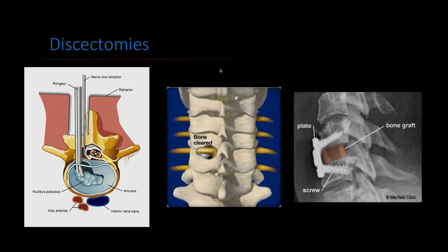You can do something similar in the neck called a foraminotomy — instead of reaching around the nerve to get the disc out from the front, this is more of an indirect decompression where you take off the bone pressing on the back and leave the disc from the front. If you want to take out the entire disc, the procedure is called an anterior cervical discectomy and fusion (ACDF), where you take out the disc pressing on the nerve and put a piece of bone graft or a cage to stabilize it, along with a plate on the front.